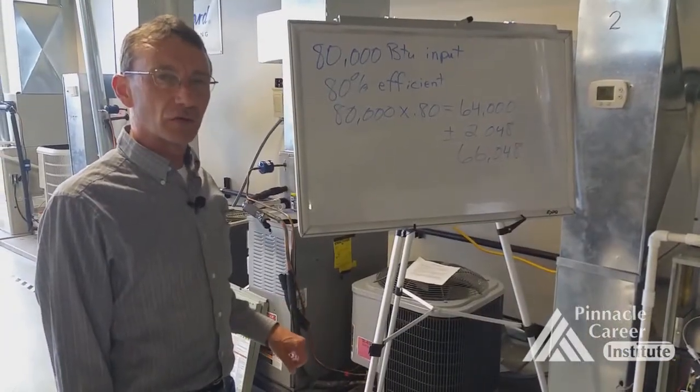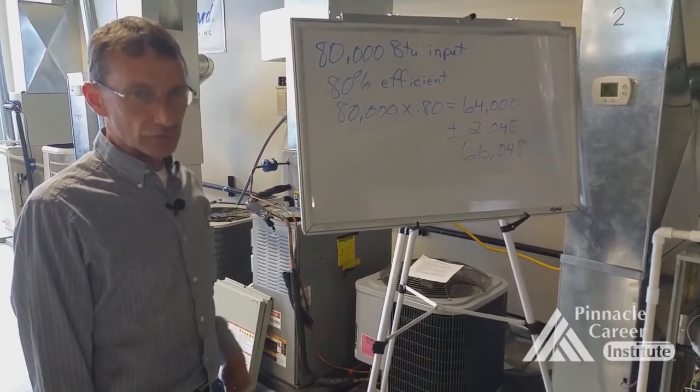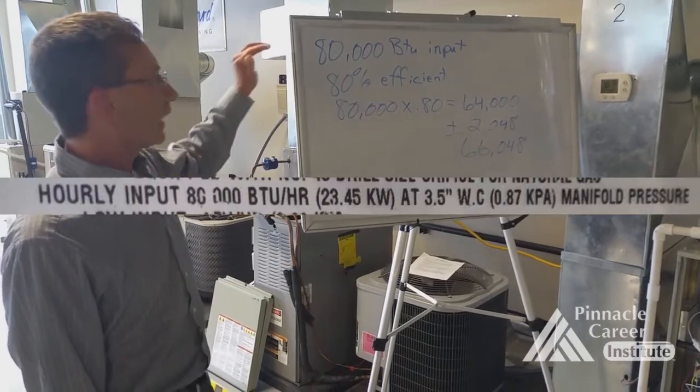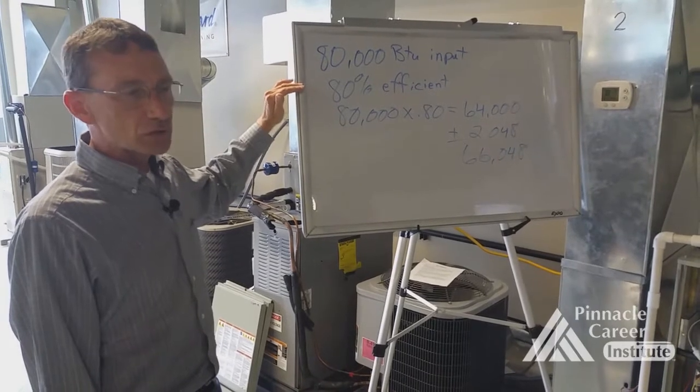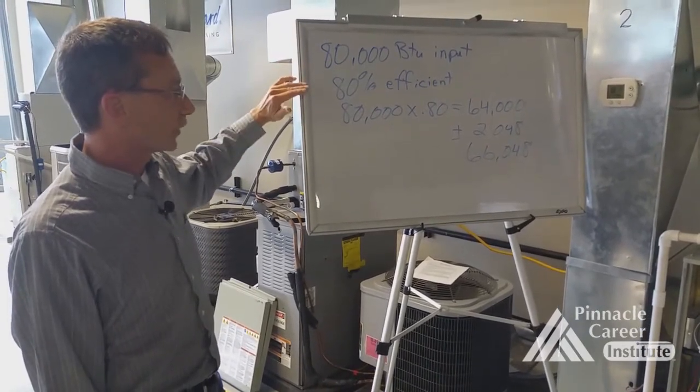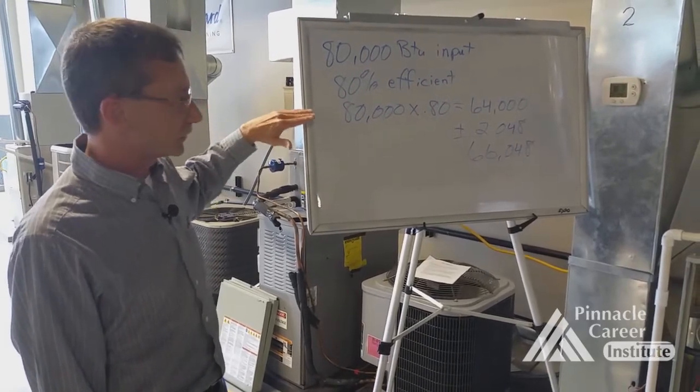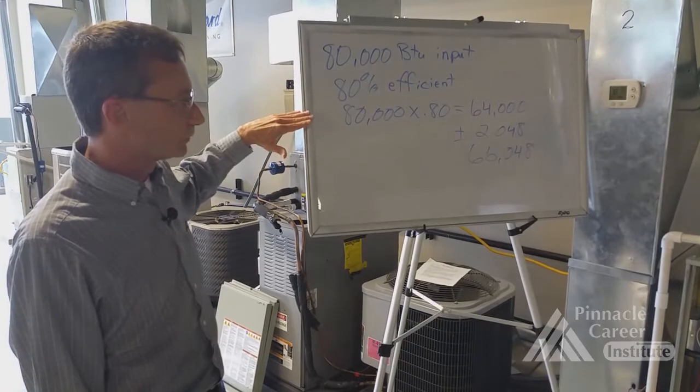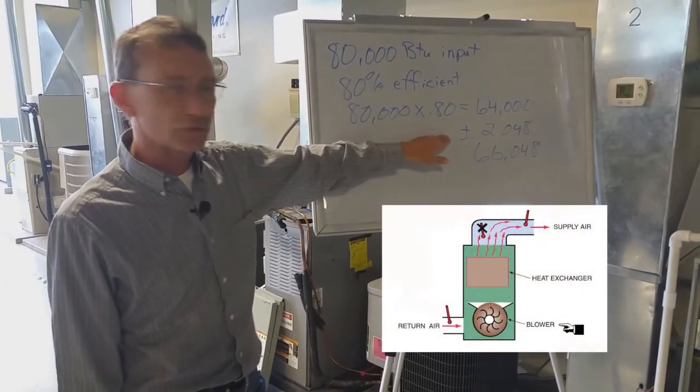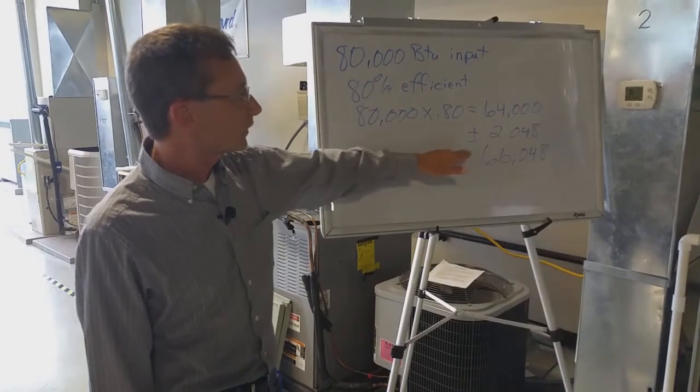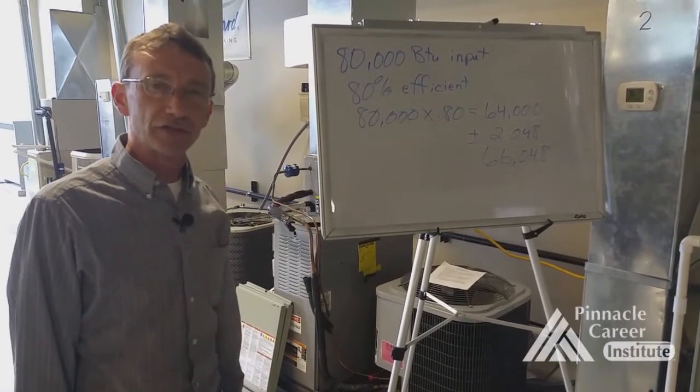We had the temperature rise off the furnace. What we need to do next is calculate the BTUs on the furnace. This furnace has an 80,000 BTU input and it's 80% efficient. So we multiply 80,000 times 0.80, which gives us the actual output of the furnace, 64,000 BTUs per hour. We are going to add the load of the fan motor, which is an additional 2,048 BTUs. This gives us a total BTU output on the furnace of 66,048 BTUs.